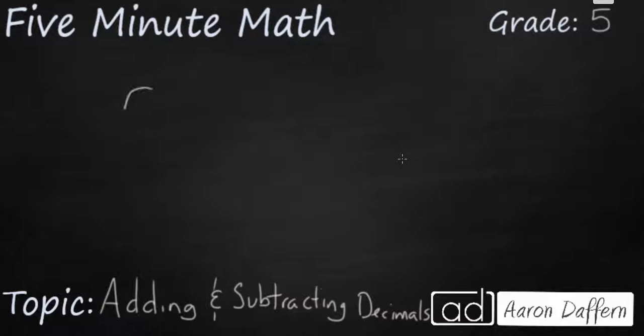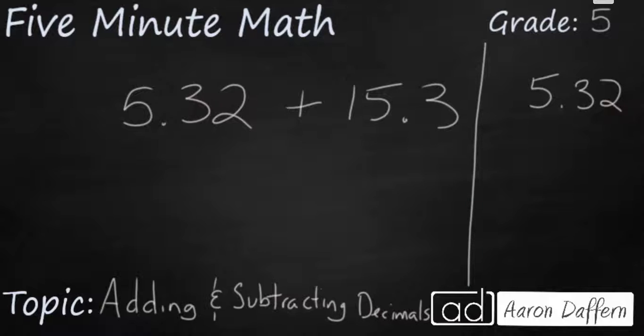Let's say we have 5 and 32 hundredths plus 15 and 3 tenths. The only thing we need to know about adding decimals is that you need to line it up vertically so I'll do that over here on the right side and you have to make sure the decimals are lined up. It doesn't really matter if there are digits sticking off to the left side or the right side. So let me write my 5 and 32 hundredths.